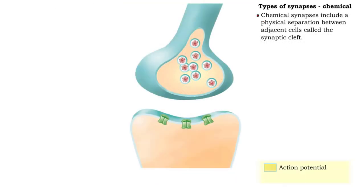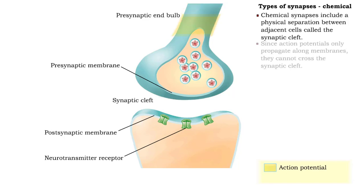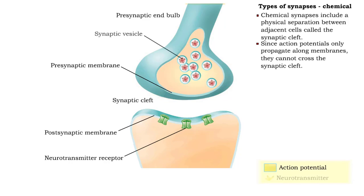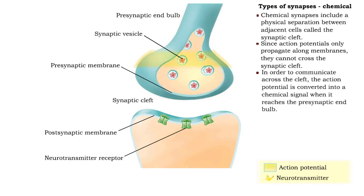A physical separation between adjacent cells, called the synaptic cleft, is a characteristic of chemical synapses. Because action potentials cannot cross a synaptic cleft, this electrical signal is converted into a chemical signal, using neurotransmitters to cross the cleft.